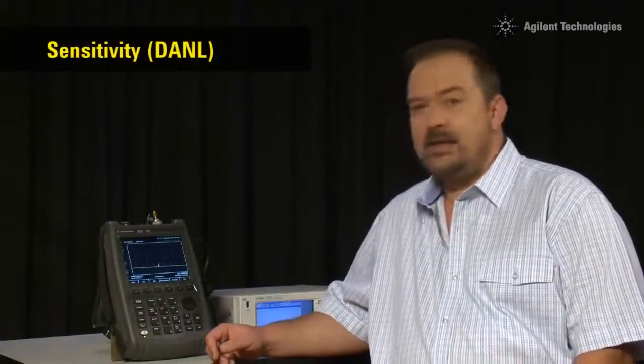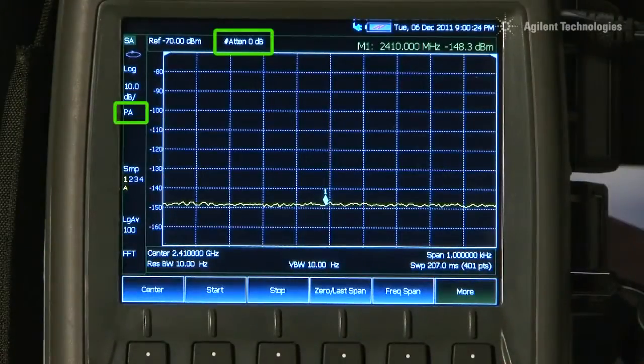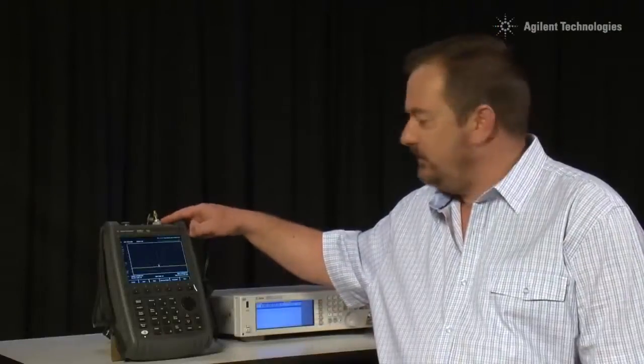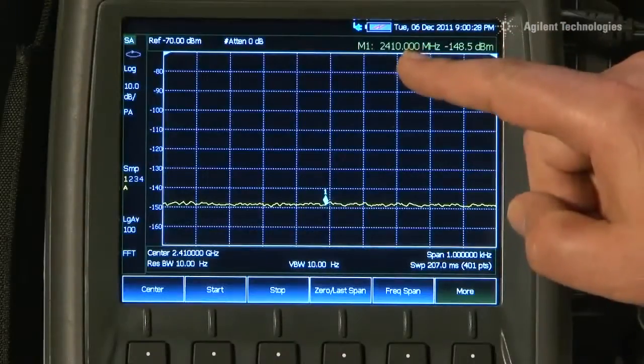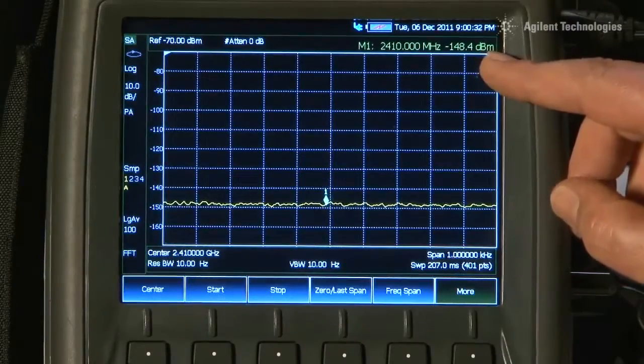A key specification of all spectrum analyzers is their sensitivity or ability to detect weak signals. Here you can see with the attenuation set to zero, the pre-amplifier turned on and the input terminated with a 50 ohm load, that at about 2.4 GHz, it's showing a noise floor of around minus 148 dBm.